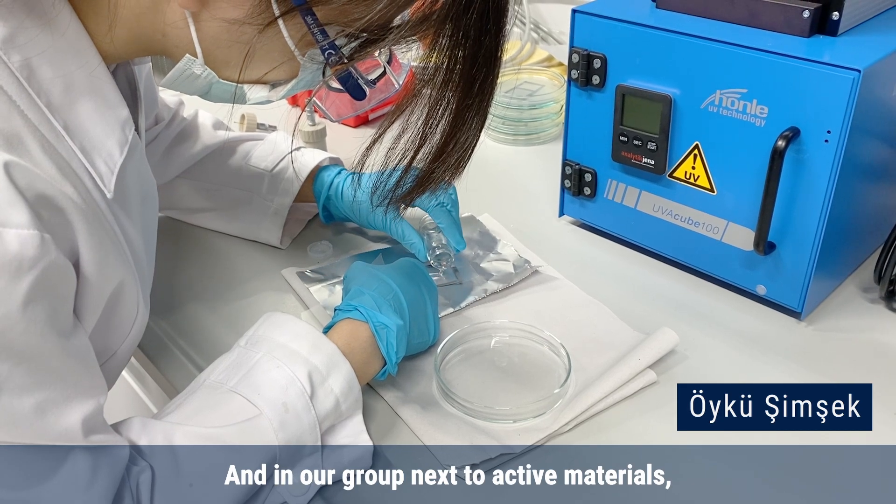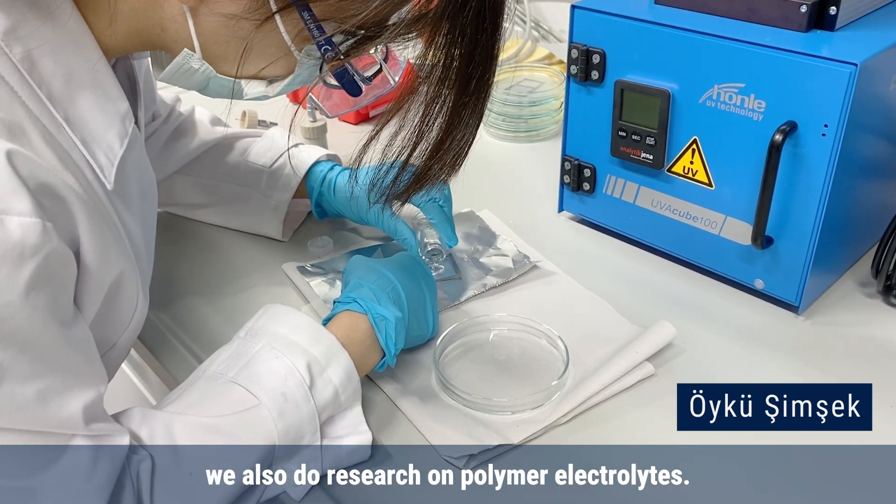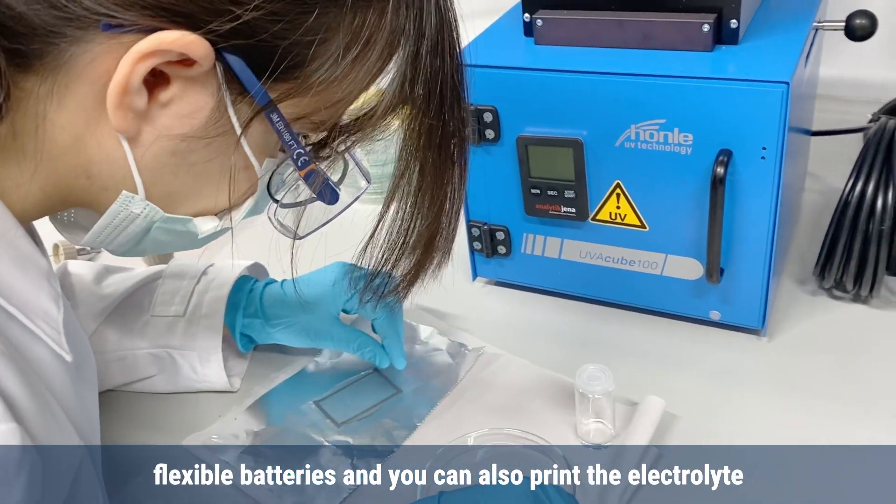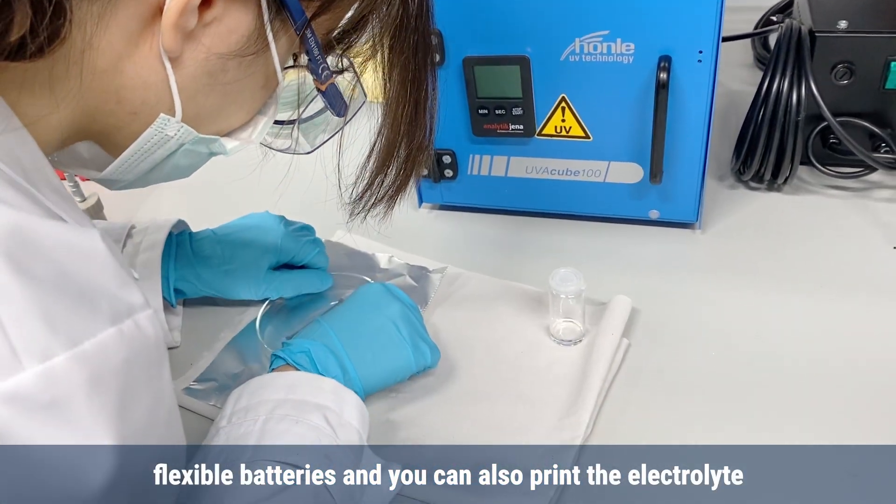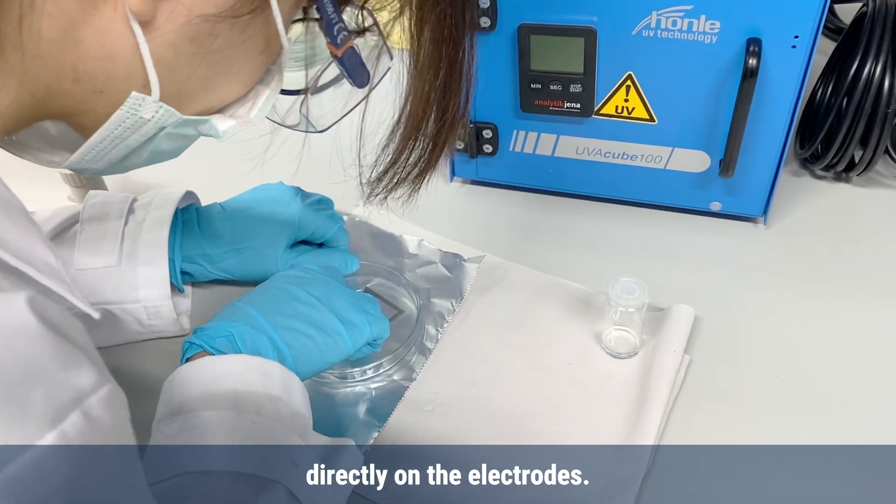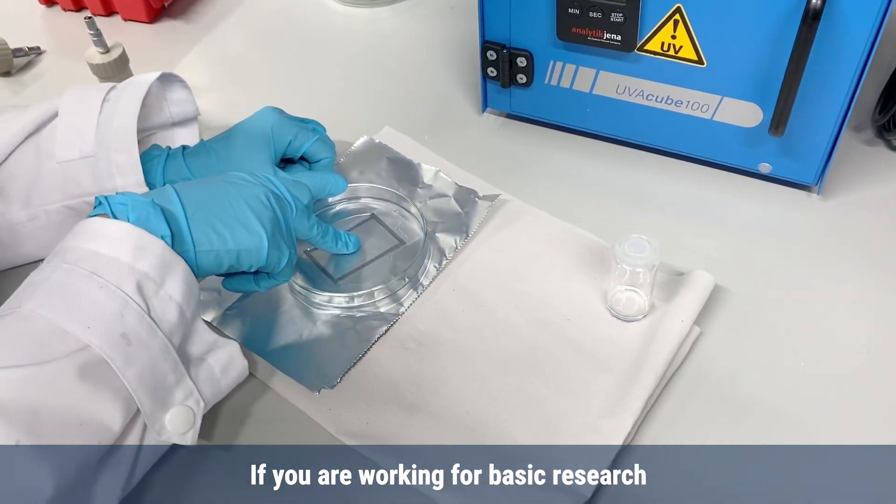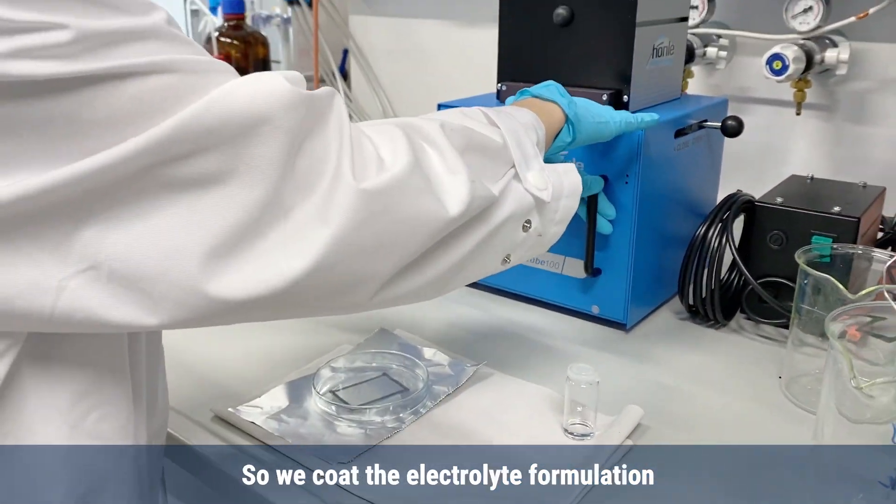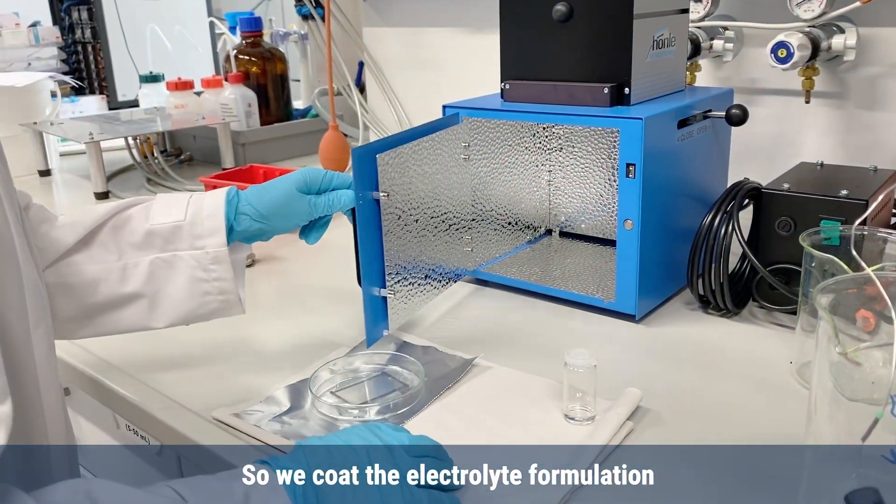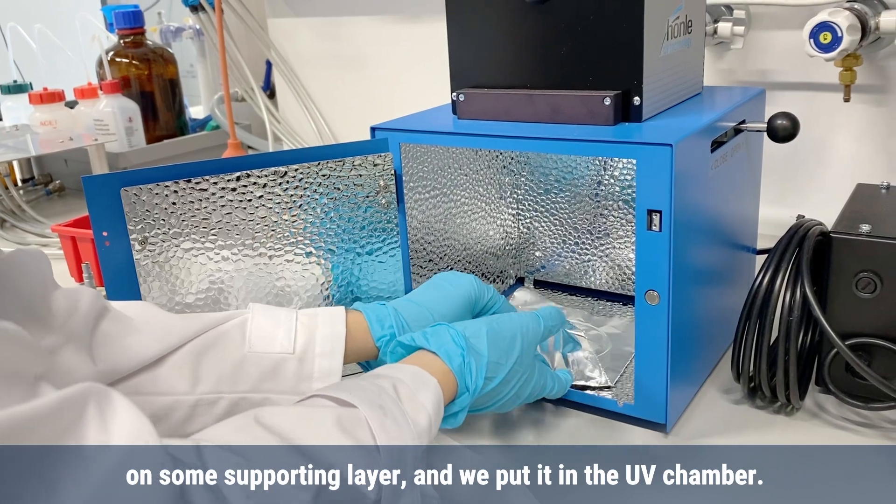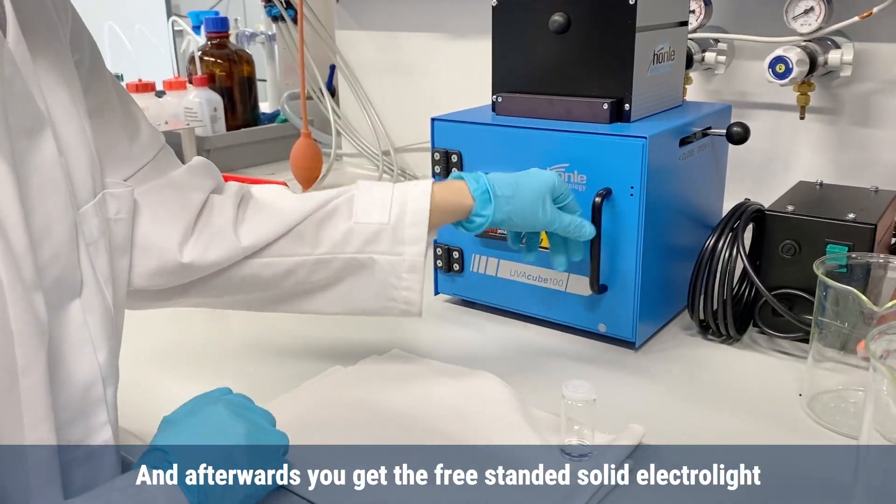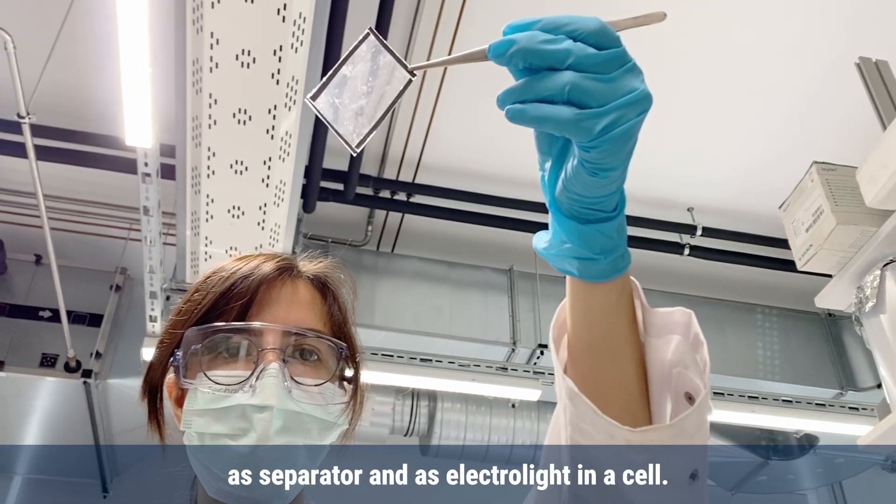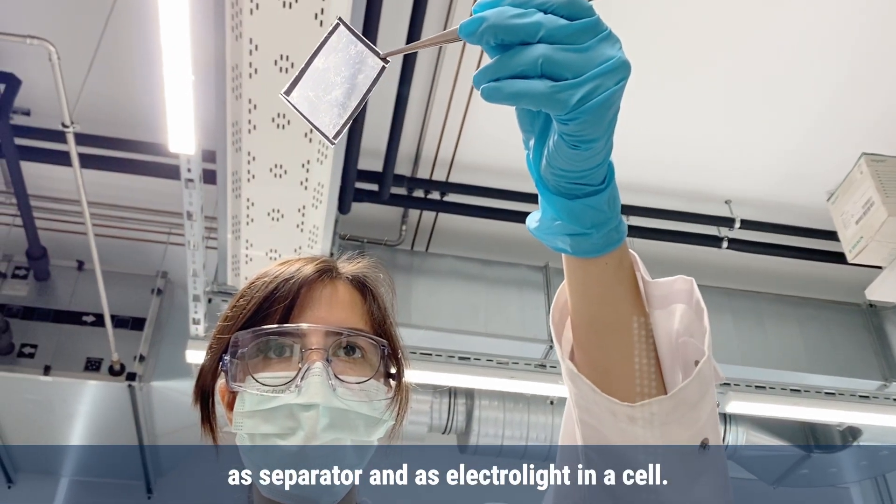In our group, next to active materials, we also do research on polymer electrolytes. These have the advantage that you can make flexible batteries and you can also print the electrolyte directly on the electrodes. For basic research, we use a small so-called UV chamber. We coat the electrolyte formulation on some supporting layer, put it in the UV chamber, and afterwards you get the freestanding solid electrolyte that you can use as separator and electrolyte in a cell.